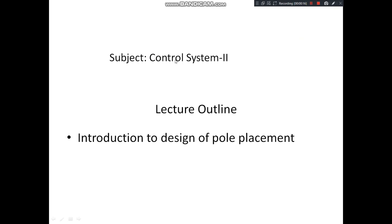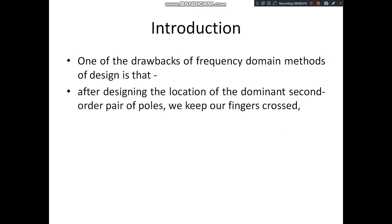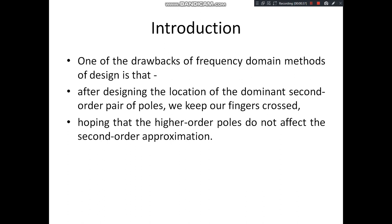Today we are going to discuss the subject Control System 2, and in that the topic Introduction to Design of Pole Placement. One drawback of the frequency domain design method is that after designing the location of the dominant second-order pair of poles, we keep our fingers crossed hoping that the higher-order poles do not affect the second-order approximations. The design is approximated towards the second-order pair of poles, which we call dominant closed-loop poles because they dominate over the remaining poles for system performance.